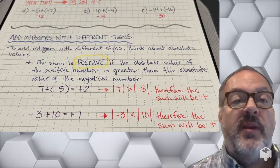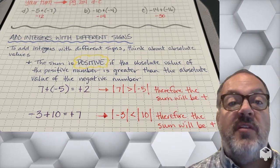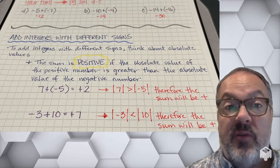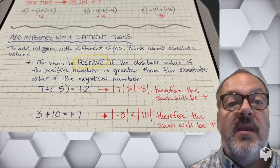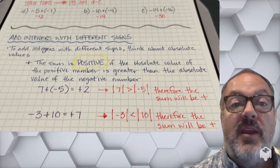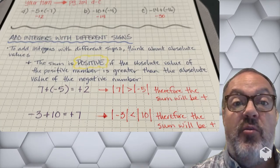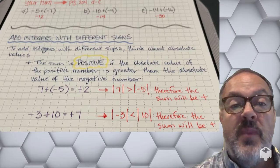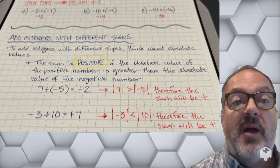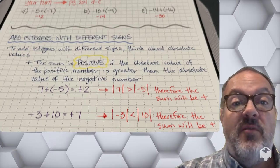This time we have something a little different. Now we're going to add integers with different signs. The sum is going to be positive if the absolute value of the positive number is greater than the absolute value of the negative number. For example, 7 plus negative 5 equals positive 2 — the absolute value of 7 is greater than the absolute value of negative 5. In another example, negative 3 plus 10 gives a positive sum because the absolute value of negative 3 is less than the absolute value of 10.